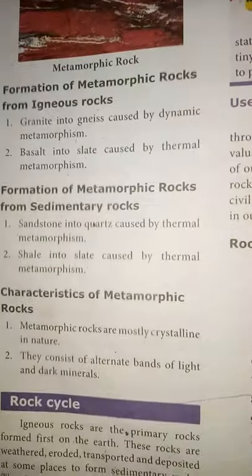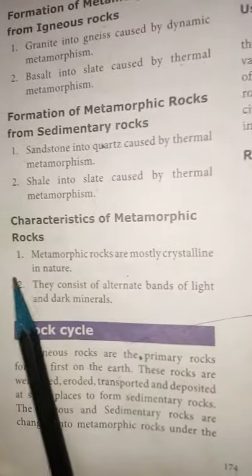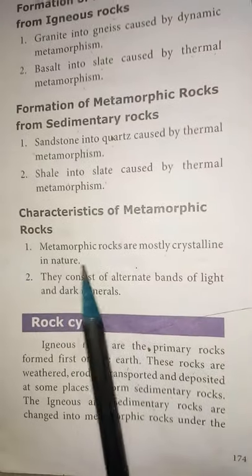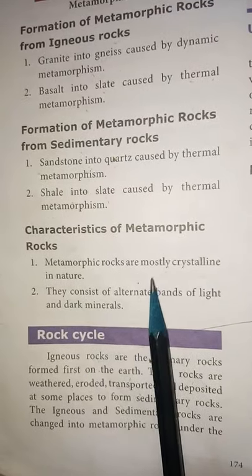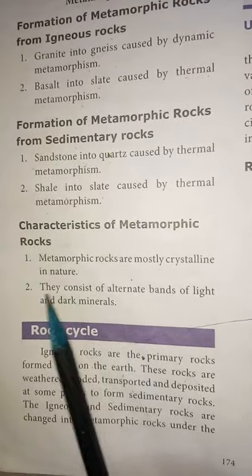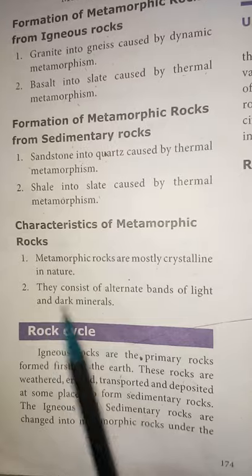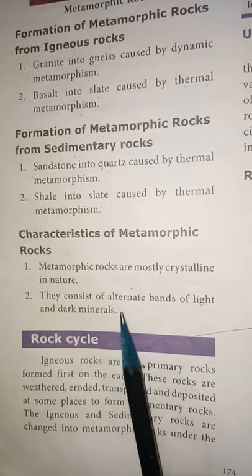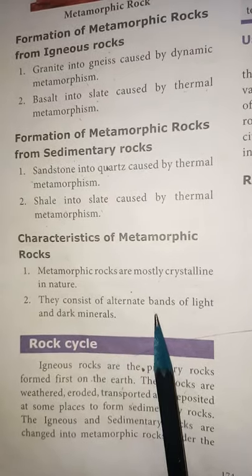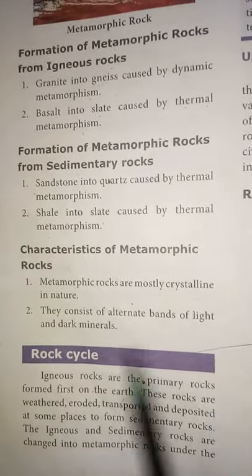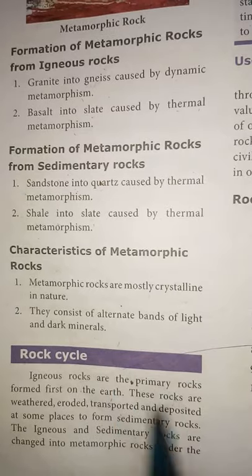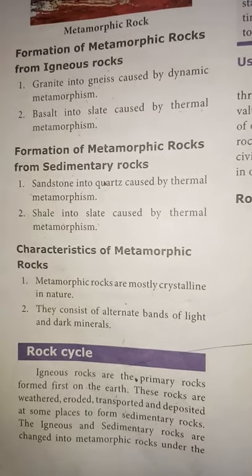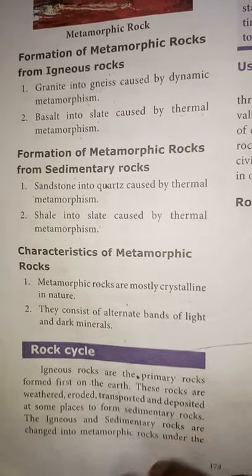Characteristics of metamorphic rocks: metamorphic rocks are mostly crystalline in nature. They consist of alternate bands of light and dark minerals. These are the three types of rocks.